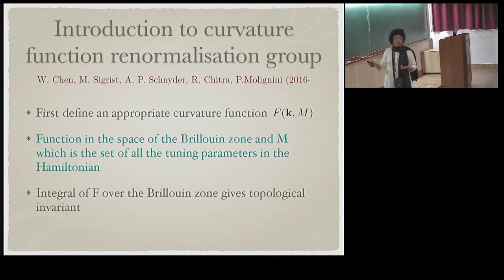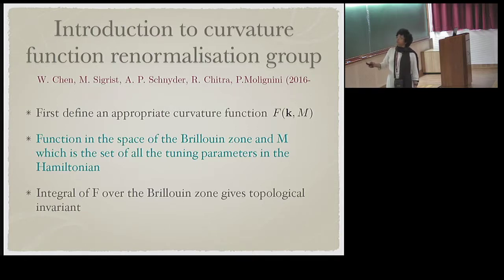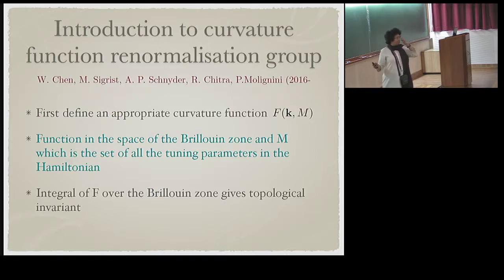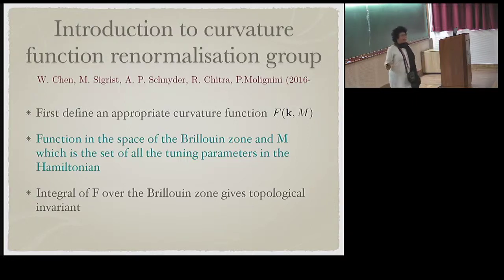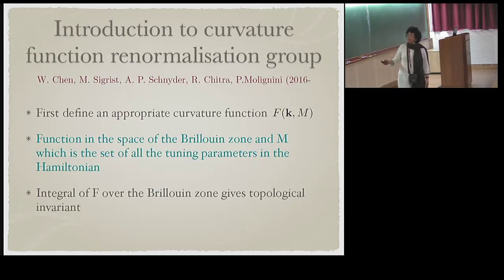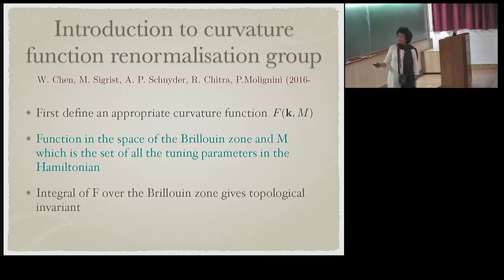This work follows a set of papers by a group from KTH in Zurich, Switzerland. Among the authors is Chitra, who was a student here at ISC with Deeptiman — seeing her name on those papers motivated me to look at them. The basic idea is to define an appropriate quantity called a curvature function, which is a function in the space of the Brillouin zone and M, the set of all tuning parameters in the Hamiltonian.